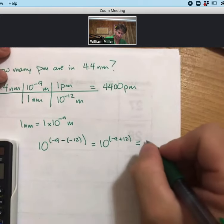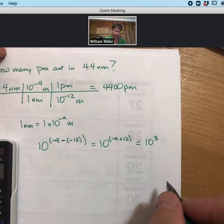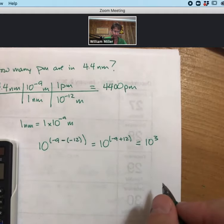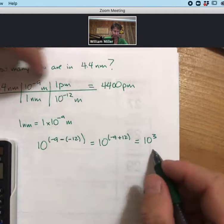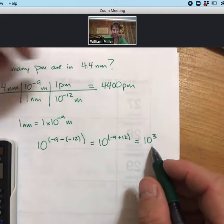Which equals 10 to the third. So 4.4 times 10 to the third, which is what these two add up to or multiply out to, equals 4,400.